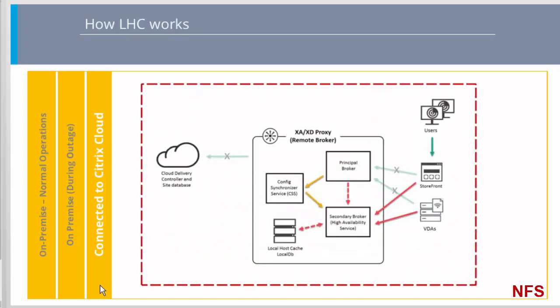In an outage mode situation, the LHC operation is also identical to that of the on-premise case. There is one thing to note though. In an environment that leverages cloud-based services, StoreFront may not be on-premise. So if users are to continue during an outage due to a WAN link failure, a local StoreFront system will be needed, and that assumption has been made in this diagram.